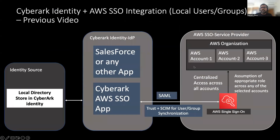So this is what I did in my previous demo. I showcased how to enable AWS SSO or AWS IAM Identity Center, how to create the permission sets, and how you can set up a SAML trust between CyberArk Identity and AWS SSO. Apart from that, we looked at the SCIM provisioning as well — primarily for local users and groups.